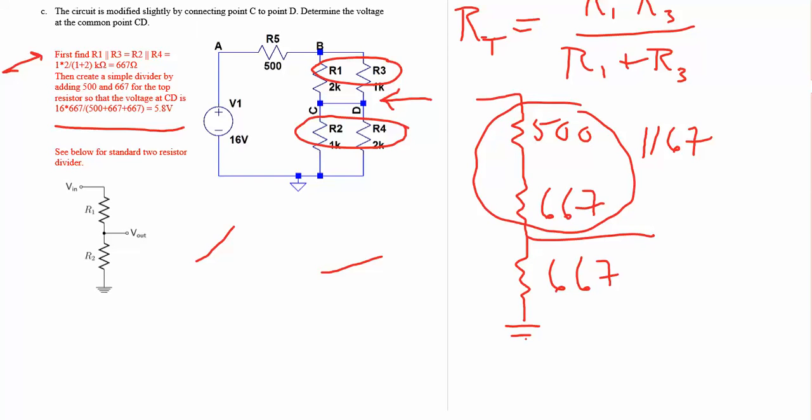So again, what we're doing is we're taking what looks kind of like a mess and putting it into the standard format of a voltage divider. So what were the steps? We combine R1 and R3 in parallel, we combine R2 and R4 in parallel. Those are identical combinations, so they both ended up being equal to 667.